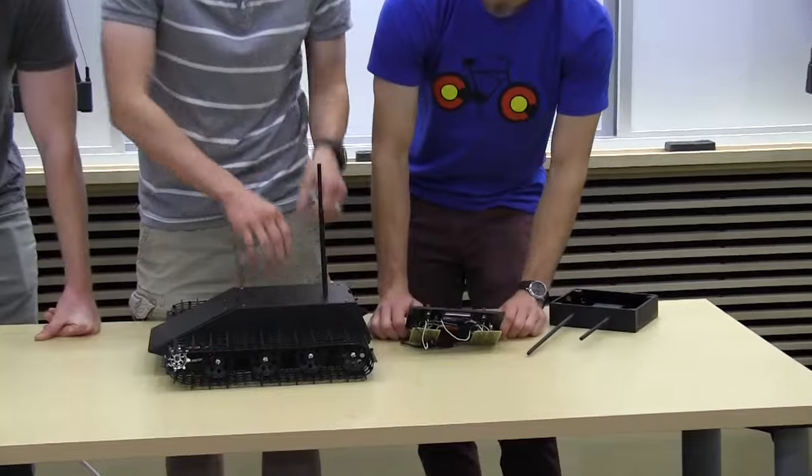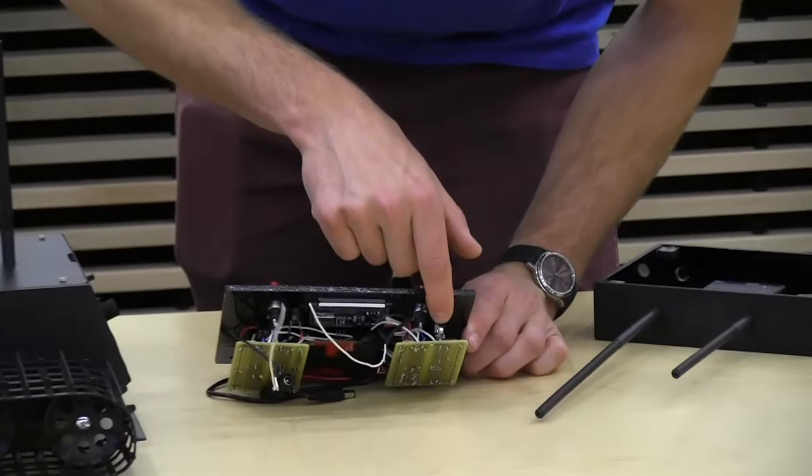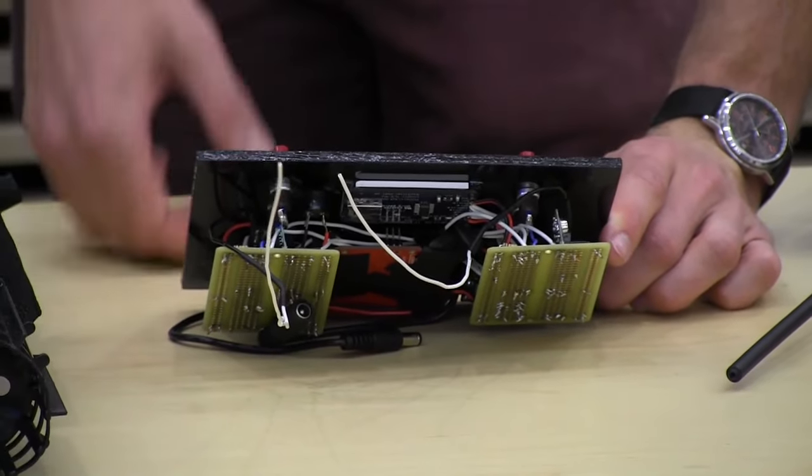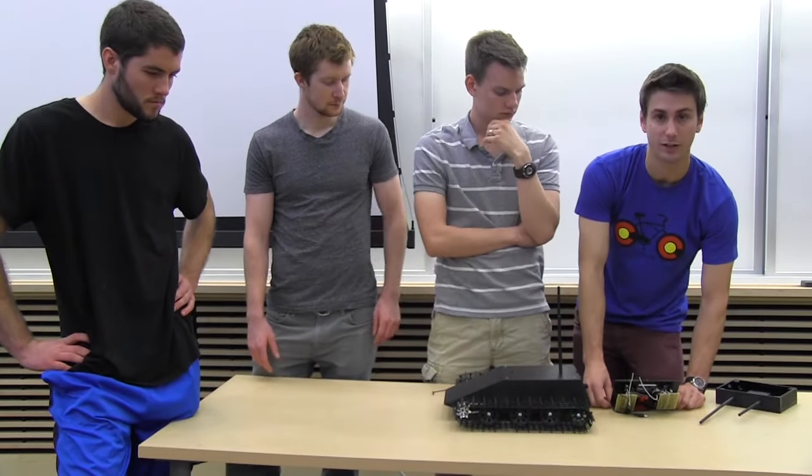All the components are soldered up onto some prototype boards. We have the transmitter right here, the radio receiver, and they're set at different frequencies so there's no interference. And then this LCD screen is a TFT LCD screen.